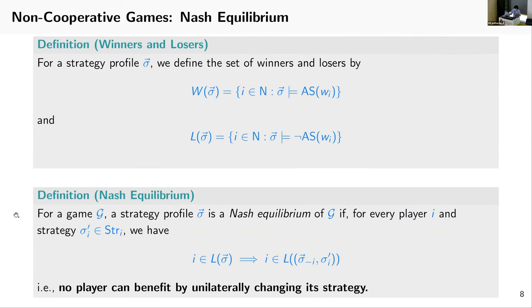To define Nash equilibrium, first we define the set of winners and losers. For a strategy profile σ, the set of winners W_σ is the players who get their goals satisfied under σ. For the set of losers L_σ, those are players who don't get their goals satisfied under σ. For strategy profile σ, it is a Nash equilibrium if for every losing player i, then no matter what it does, it keeps losing. So no player can benefit by unilaterally changing its strategy. That's why it's stable.